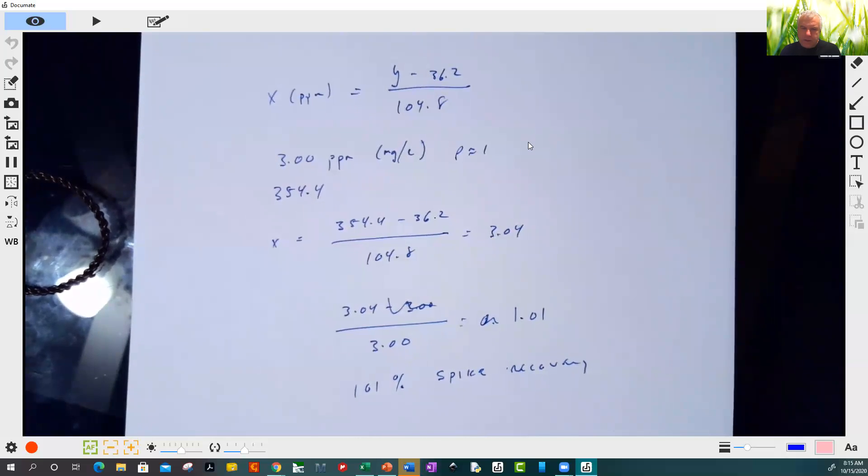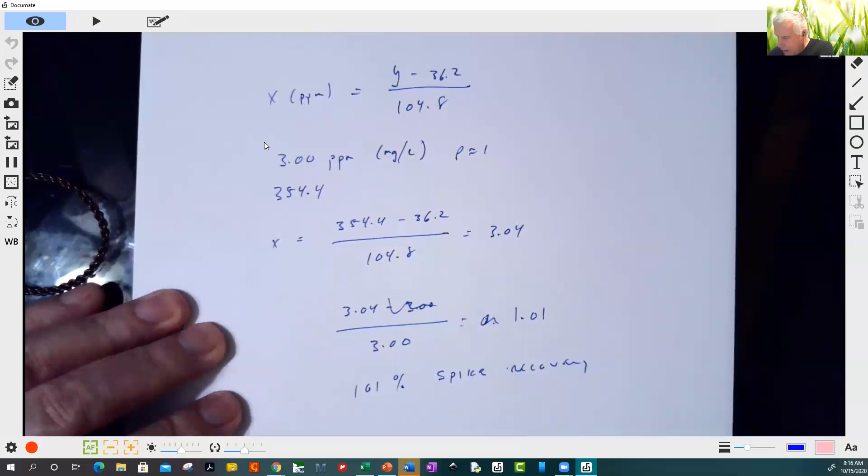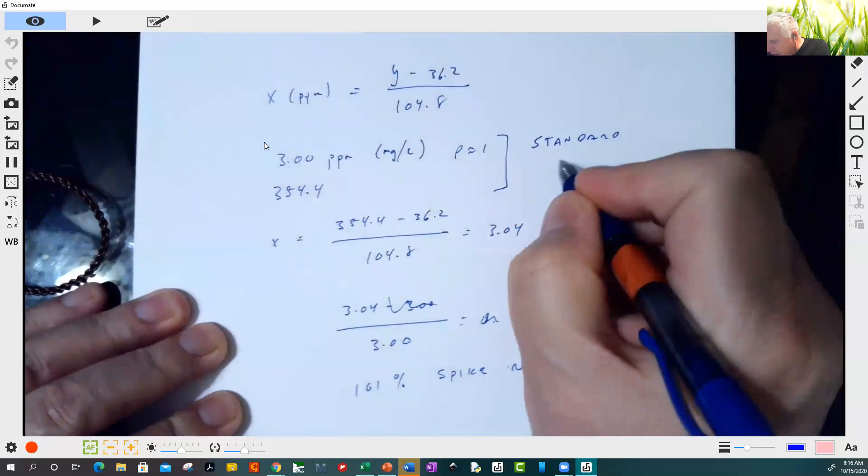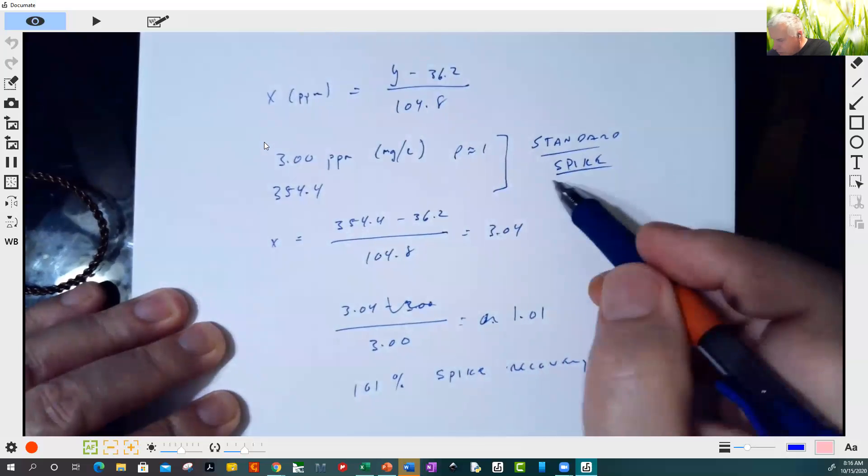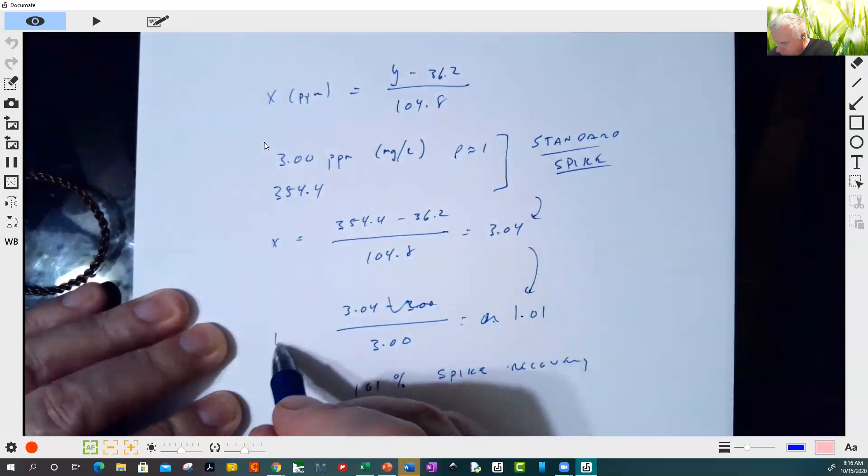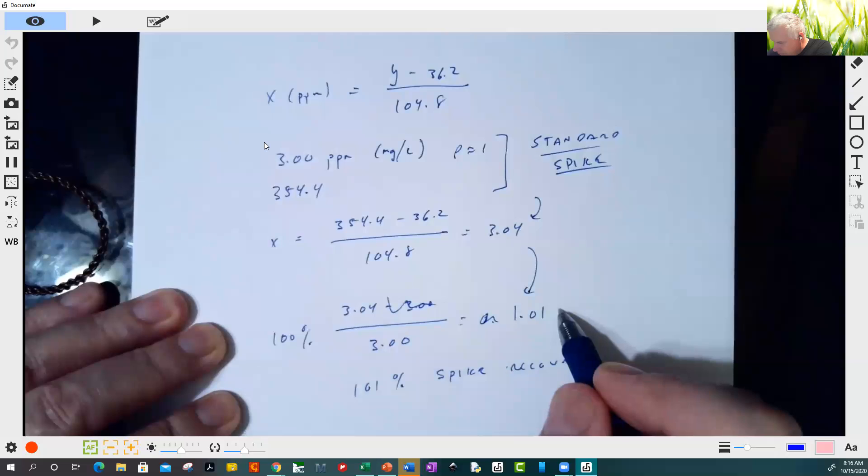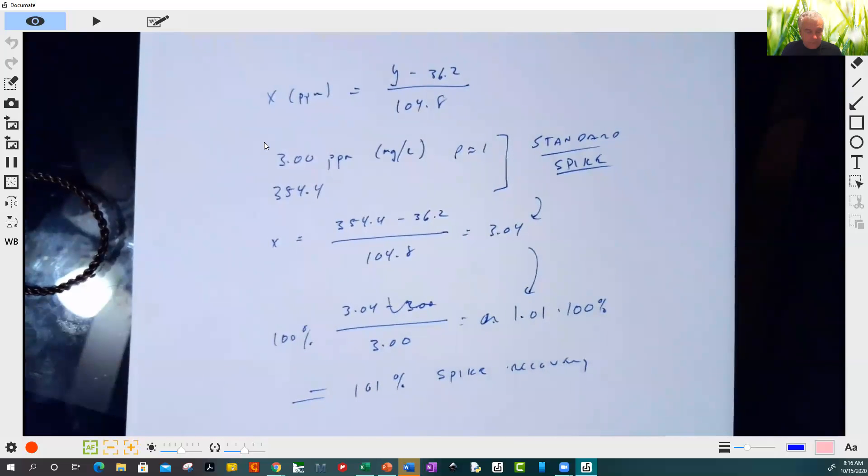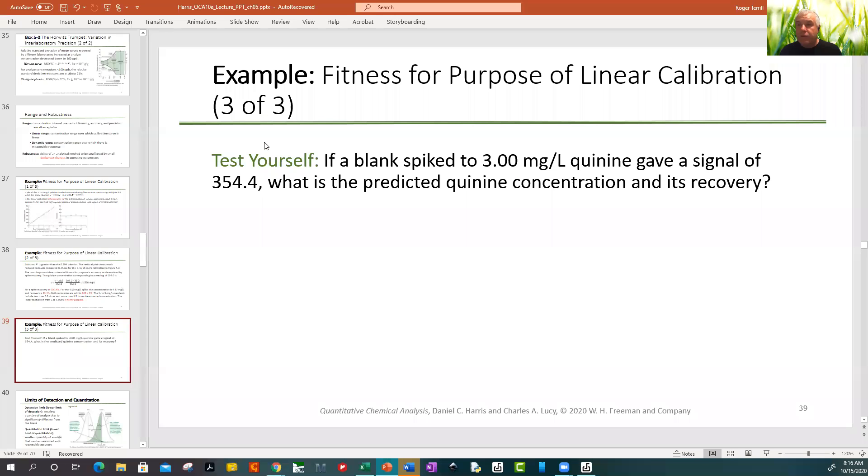So the spike recovery is 3.04 over 3.00. 1.01, thank you Alvin. Saving my bacon here every time. So this is 101% spike recovery. So this is also suitable for purpose, I think. Basically, all this is asking us to do is take this signal and the parts per million of a standard. This is a standard spike. And then just plug those into the equation, get the spike recovery. So it's pretty simple.